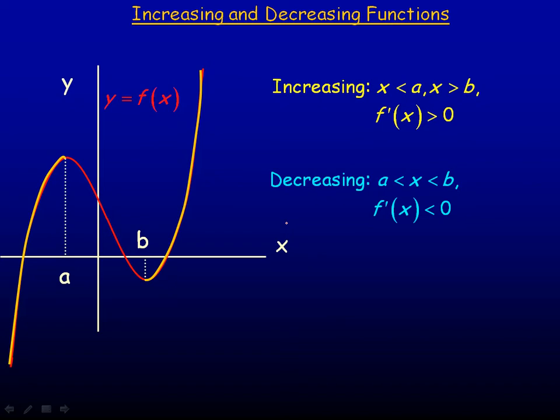Now if you draw a tangent line in any of those intervals, so for example if I were to draw a tangent line here, or here, here, or here, notice that all of those tangent lines are sloped upward. So the derivative would be positive in all of those places. So a positive derivative means that the function is increasing.